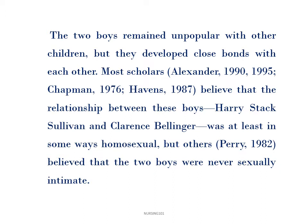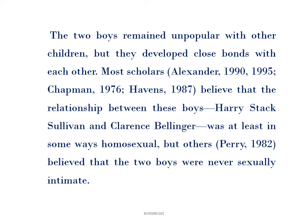The two boys, Sullivan and his friend, remained unpopular with other children, but developed a very close bond with each other. Most scholars — Alexander Chapman and Havens — believe that the relationship between Sullivan and Clarence Balinger was at least in some ways homosexual. But other scholars like Perry believed that the two boys were never sexually intimate.